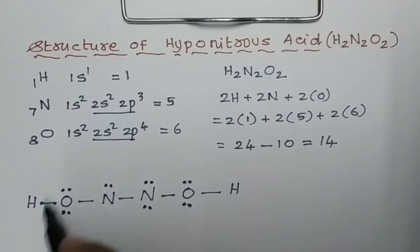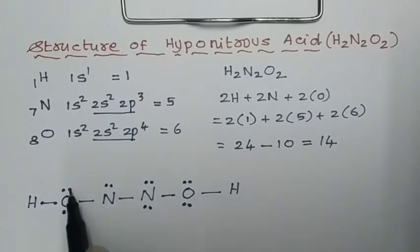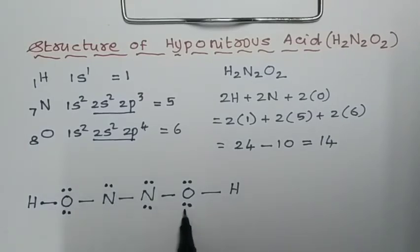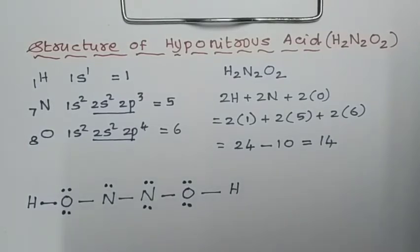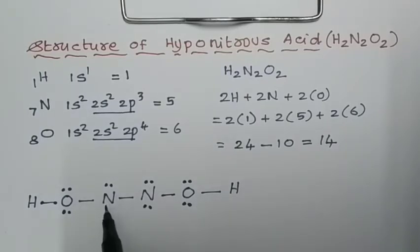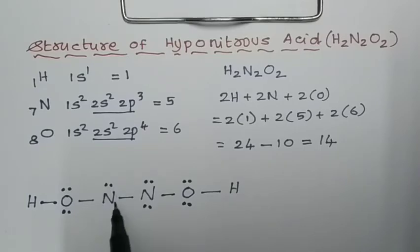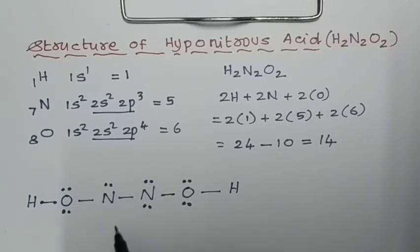Counting all electrons placed so far: the lone pairs on both oxygens and the nitrogen lone pairs account for all 14 remaining electrons. However, nitrogen does not yet achieve its octet — it only has 6 electrons around it — so we need to adjust the structure.